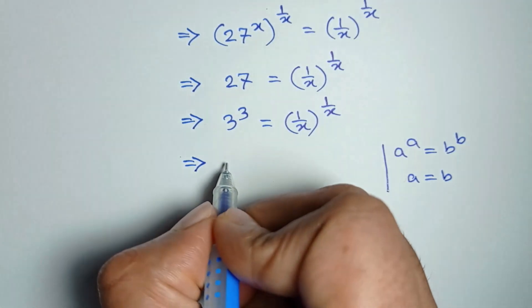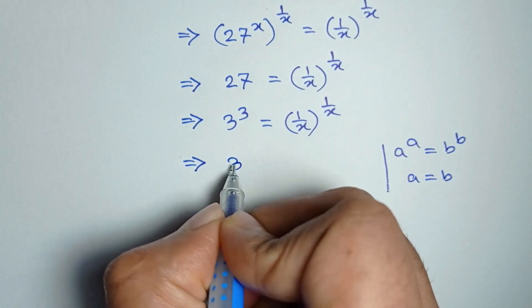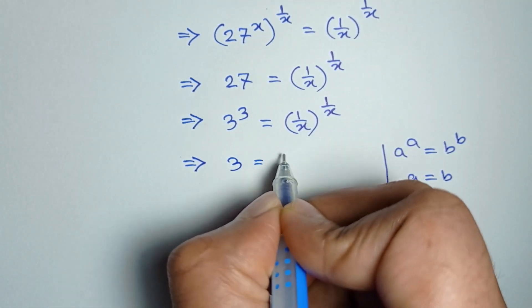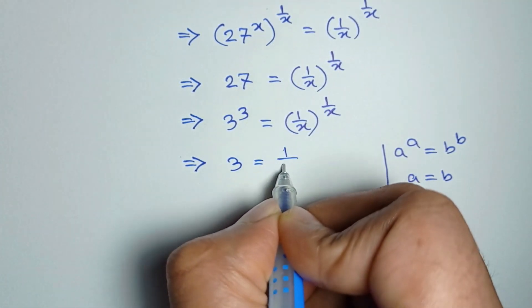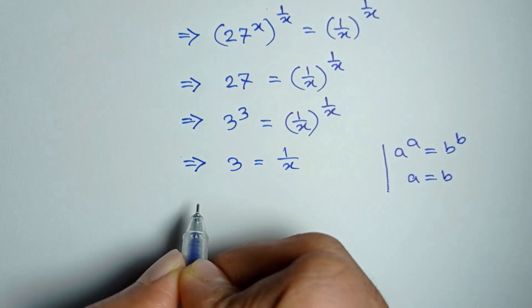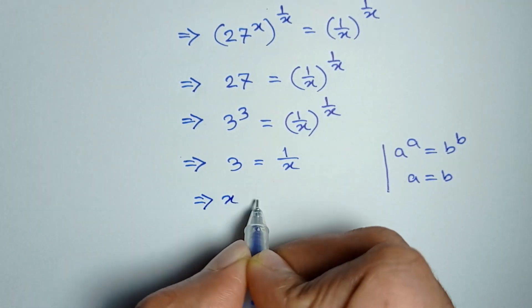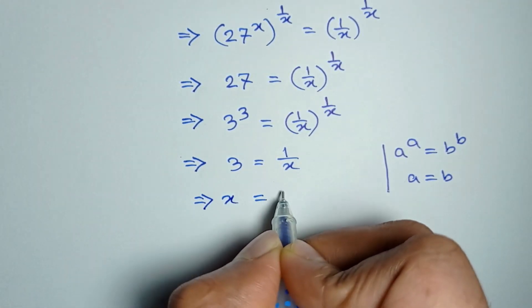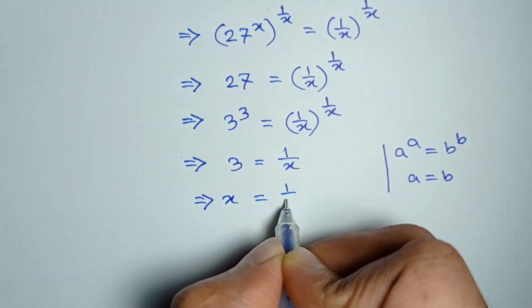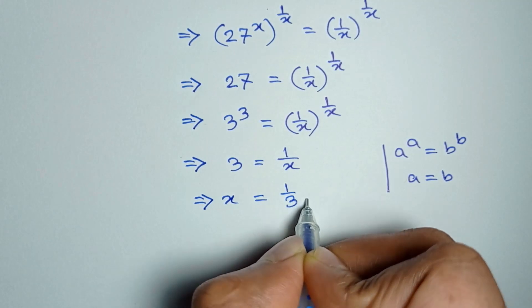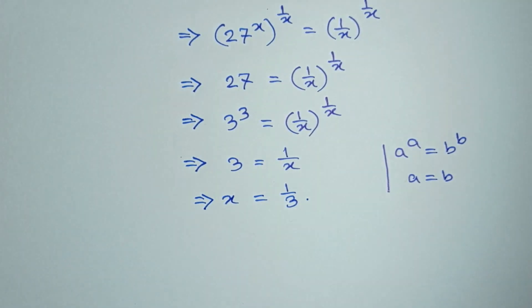We can write 3 is equal to 1 divided by x, so x is equal to 1/3. This is the solution of the equation. Thanks for watching.